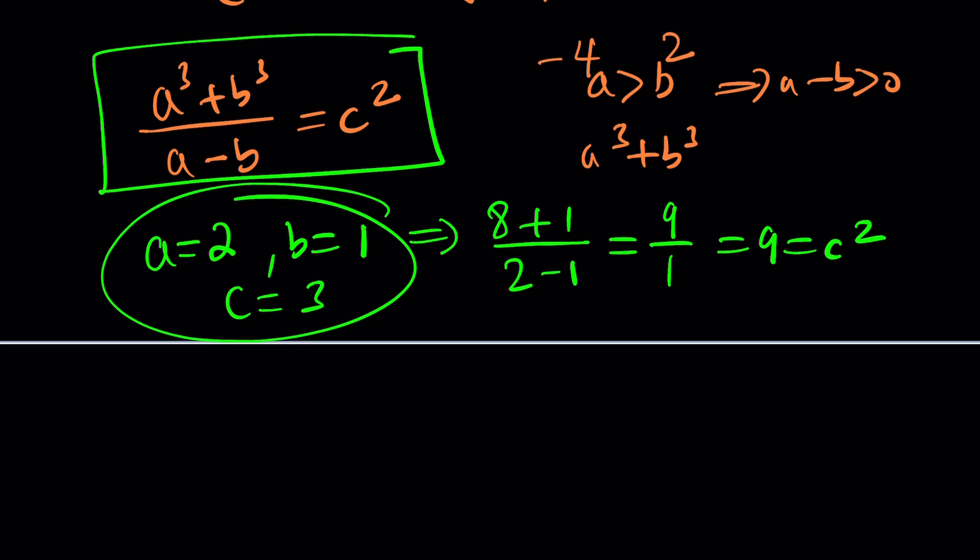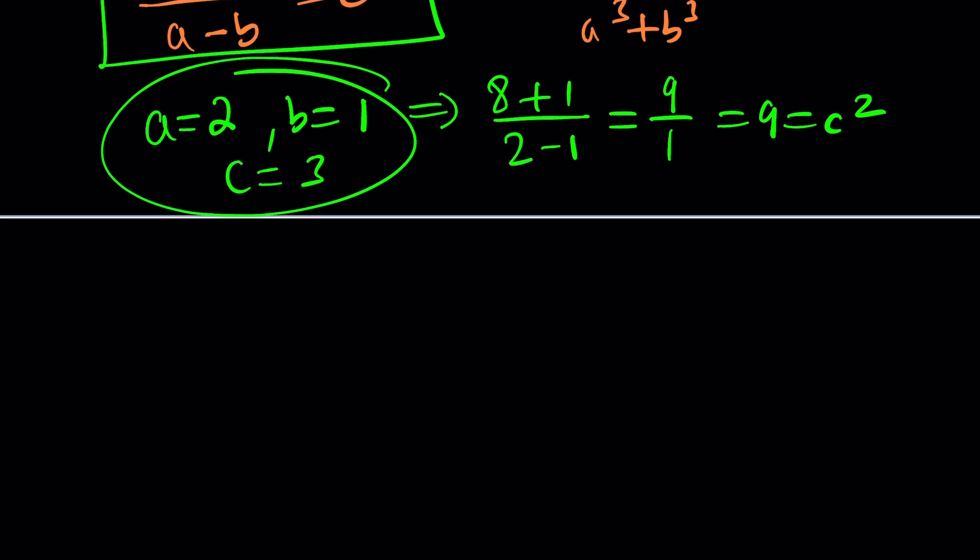So, that gives us a triple. And again, I'm focusing on positives. Otherwise, c can also be negative 3. That doesn't matter much because we're looking for the number of solutions. But that gave us a solution. Does that guarantee there's going to be more? No. You never know. So, we're going to continue experimenting until we get something meaningful.